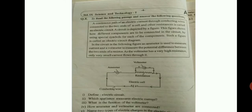Next question, option question for this is, read the following passage and answer the following questions. You just have to read the passage and answer the following question. Here the circuit is also given. Our first question is define electric circuit. Next, which appliances measures electric current? What is the function of the voltmeter? How are ammeter and voltmeter connected? Name the two types of electric charges in electric circuit.